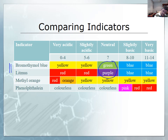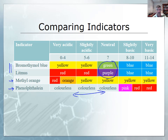Notice that methyl orange and phenolphthalein are not indicators of neutrality. In the case of phenolphthalein, neutral solutions are the same color — colorless — as acidic solutions, so we couldn't use phenolphthalein to tell the difference between an acid and a neutral solution. Likewise, we couldn't use methyl orange to tell the difference between a neutral solution and a basic solution, because both would turn yellow.